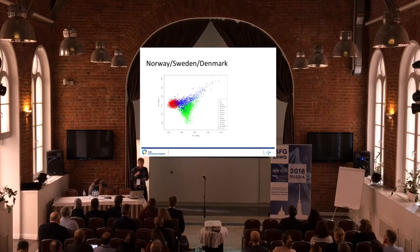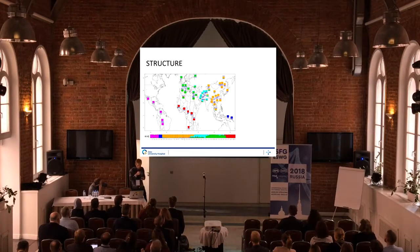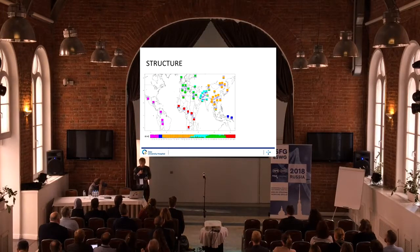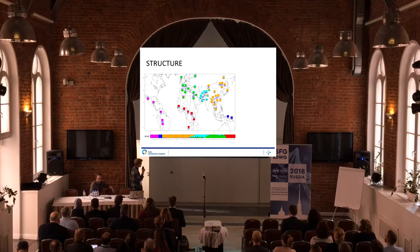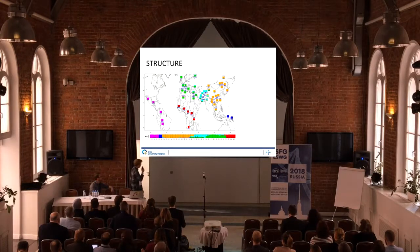The last thing before going into the results is STRUCTURE. What we see in the bottom is the decomposition of each population of the world, and each color represents a sort of sub-population.